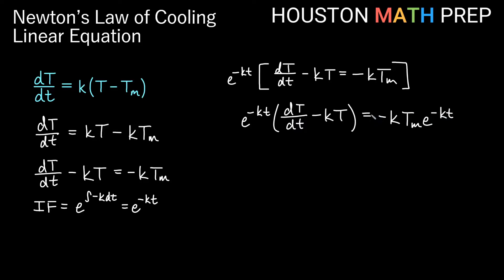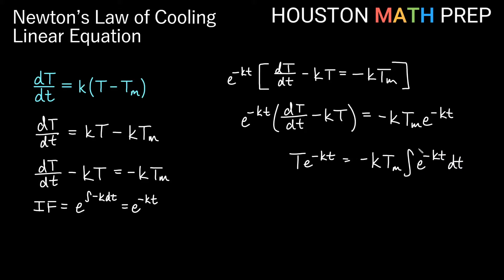Now we'll integrate both sides with respect to time. Remember if we integrate the left side, this is a product rule for T times the integrating factor, so integrating just gives us T times the integrating factor: capital T times e to the negative kt. Over on the right side, negative k and T_m are all constants, so we can factor those out. When you integrate e to the negative kt, the reciprocal of negative k comes out, which reduces the negative k out front. So we get T times e to the negative kt is equal to T_m times e to the negative kt plus our constant of integration C.